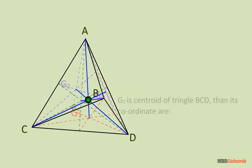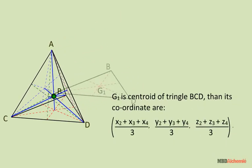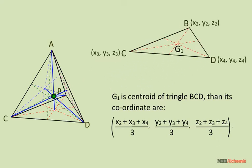We know that coordinate of centroid are sum of all x-coordinates divided by 3, sum of all y-coordinates divided by 3, sum of all z-coordinates divided by 3.